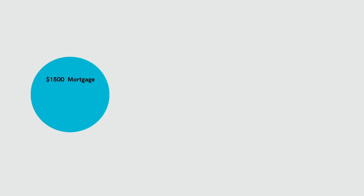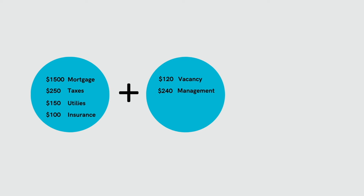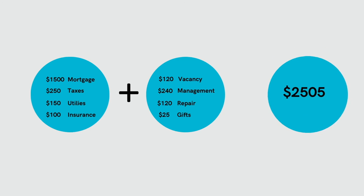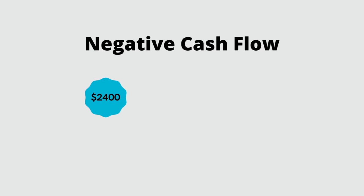For our example, let's include tenant gifts and assume a reserve fund will build to cover capital expenditures. Back to calculations with our new categories: $1,500 mortgage, $250 taxes, $150 utilities, $100 insurance, $120 vacancy, $240 property management, $120 repairs and maintenance, and $25 for gifts. Our total with all eight expense categories is $2,505 a month. If we're only collecting $2,400 a month in rent, we have negative cash flow of $105 per month. We thought this property would pay us $400 a month — we're now over $100 in the hole, a $500 per month swing, which is $6,000 a year. You can see why it's important to run your numbers properly.